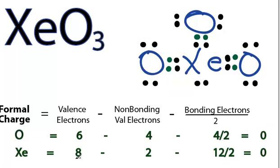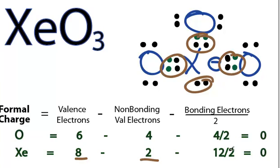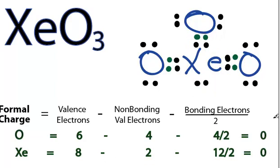For the xenon, we have 8 valence electrons, we have 2 that are non-bonding. And then we have 4 plus 4 plus 4, 12 bonding electrons, which we divide by 2. 8 minus 2 minus 6 is 0.